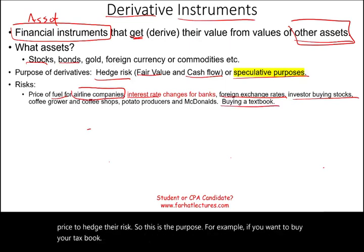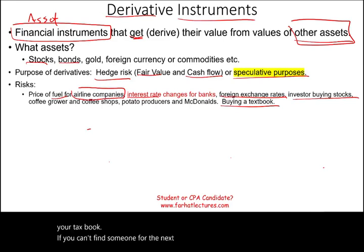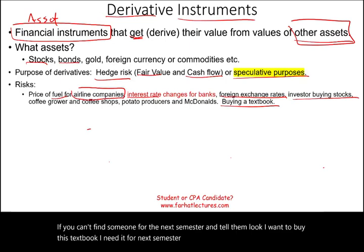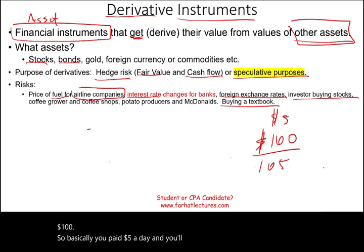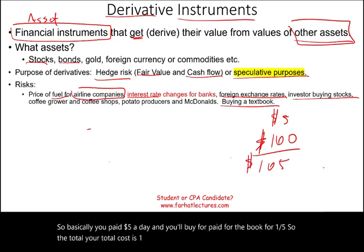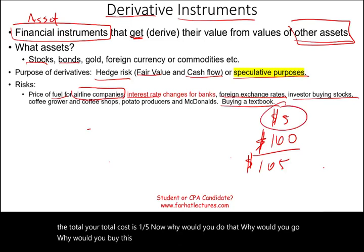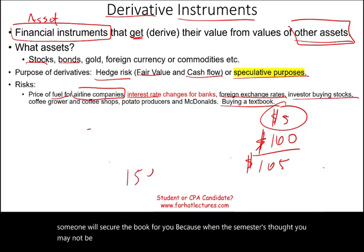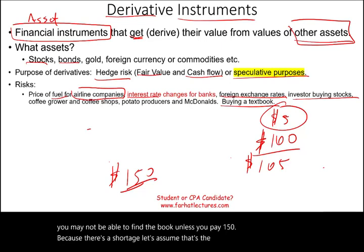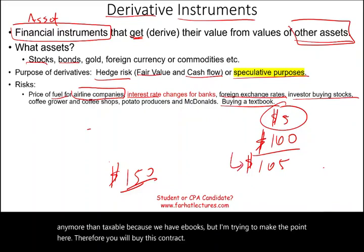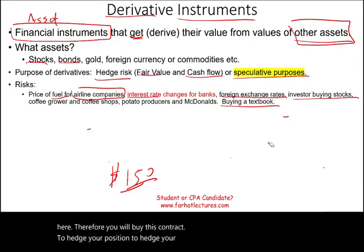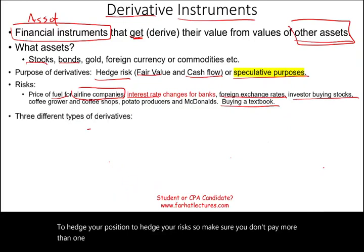Here's a simple analogy: imagine you need a textbook next semester and there's a shortage. You find someone and say, 'I'll give you $5 now, and you'll sell me the book for $100.' Your total cost is $105. Why do this? Because when the semester starts, you might only be able to get it for $150 due to the shortage. You buy this contract to hedge your risk and ensure you don't pay more than $105.